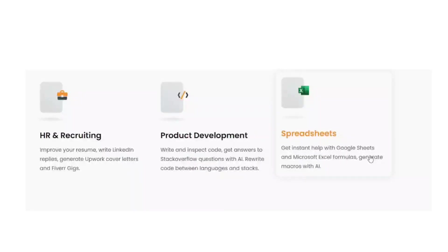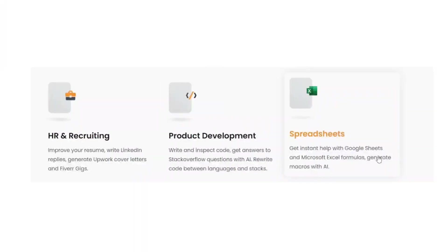Talking about product development, you can inspect code — whatever flow a particular webpage is having, you can extract it and develop it as well. And talking about spreadsheets, you can get help with Google Sheets and also get Microsoft Excel formulas to generate macros with AI.